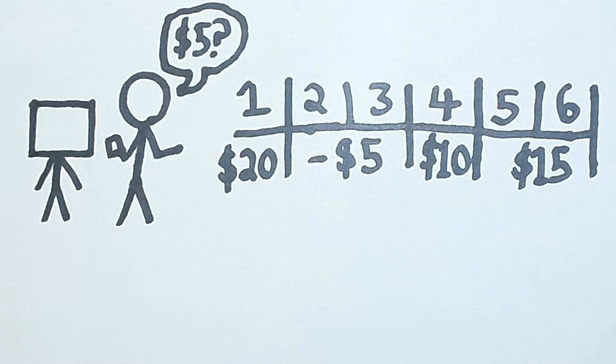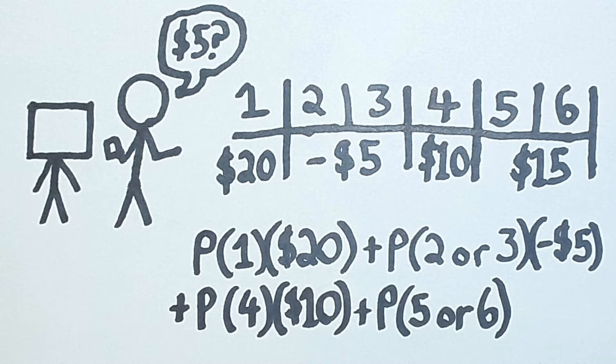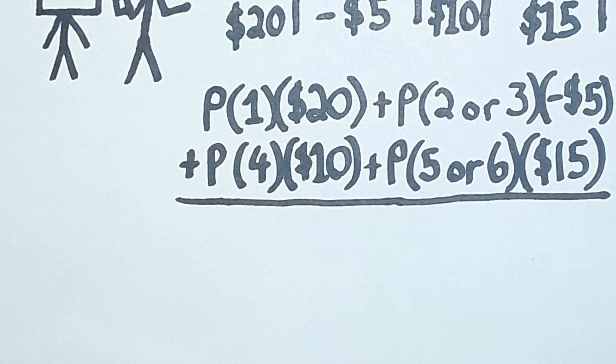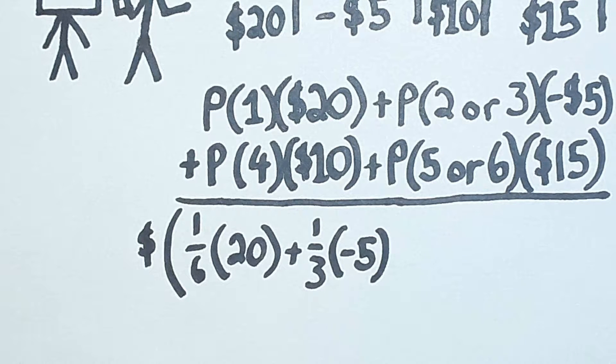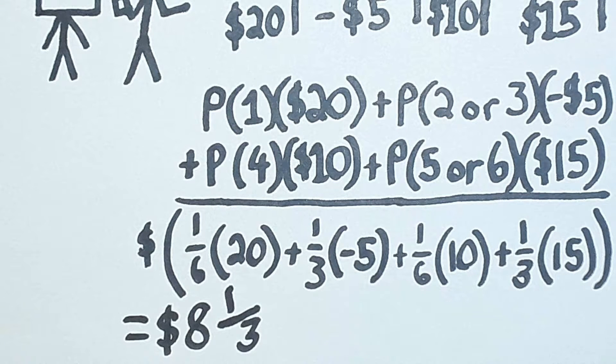He will roll the dice and play the game if you pay him $5 up front. Is this a good deal? Well, the way that you're supposed to calculate things like this is take every individual outcome, multiply it by the probability that you'll get that outcome, and then add them all together. So we have the probabilities of rolling certain numbers, multiplied by the values if you get those numbers, all added together to get an expected value of playing of $8.